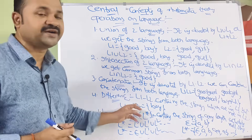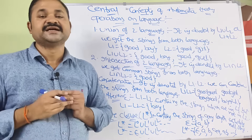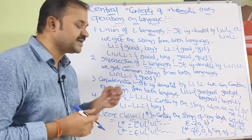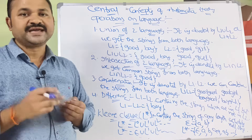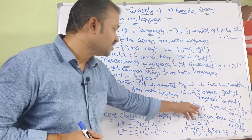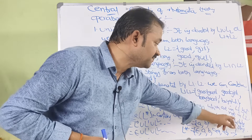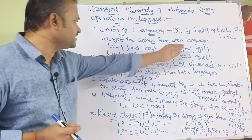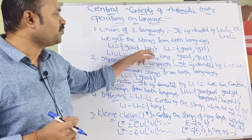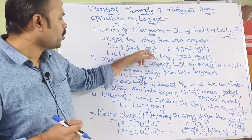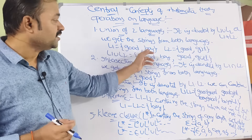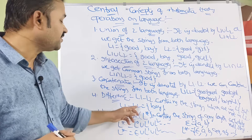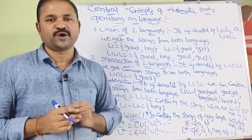Fourth operation is difference of two languages, denoted by L1 − L2. It contains strings which are in L1 but not in L2. Using the same example, 'boy' is in L1 but not in L2, so L1 − L2 = {boy}.